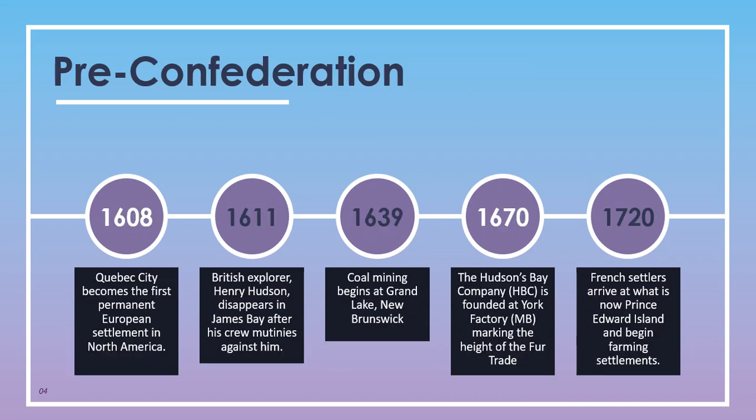Moving into the pre-Confederation era, more Europeans were starting to settle in the country. In 1608, Quebec City became the first permanent European settlement in North America. Around 1611, British explorer Henry Hudson, searching for what was called the Northwest Passage, disappeared in James Bay after a long harsh winter forced his crew to mutiny against him and abandon him in that area.